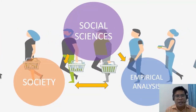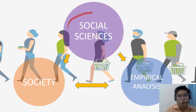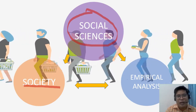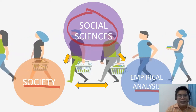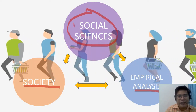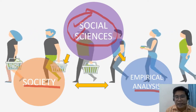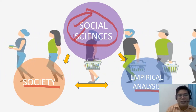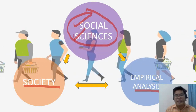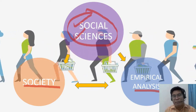Let's take a look at this graphic organizer. The concept of social sciences is comprised of two concepts: we have society, and we have empirical analysis. This comes from the words 'social' and 'sciences' themselves. 'Social' comes from the root word 'society,' and 'sciences' refers to a systematic body of knowledge. So social sciences has an element of society and an element of science, or empirical analysis.